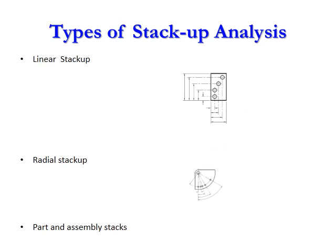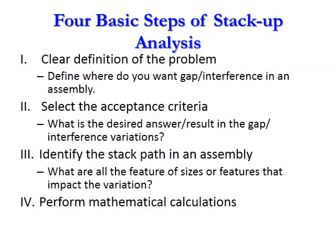Types of Stack-Up Analysis: Linear Stack-Up, Radial Stack-Up, Bond and Assembly Stack-Ups. Four Basic Steps of Stack-Up Analysis. First, clear definition of the problem: define where do you want gap or interference in an assembly. Second, select the acceptance criteria: what is the desired answer or result in the gap or interference variations. Third, identify the stack path in an assembly: what are all the features or sizes that impact the variation. Fourth, perform mathematical calculations.